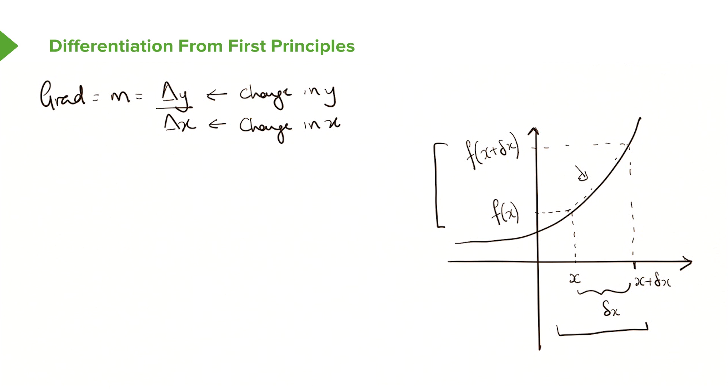So let's work out what the change in y would be here. The change in y would, in this case, be f of x plus delta x, and you subtract from it f of x, to get this value here that we've just worked out. And then similarly, for the x-axis, we'll have x plus delta x, and we take away x from it.